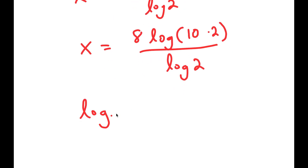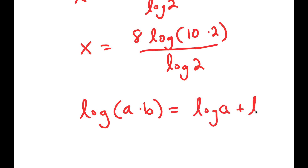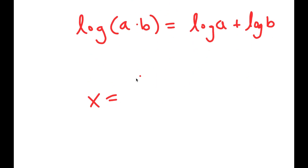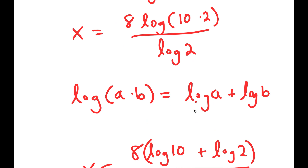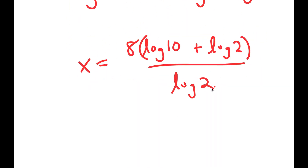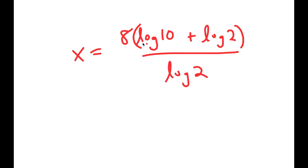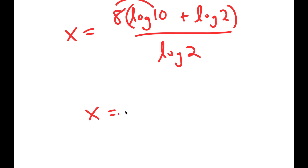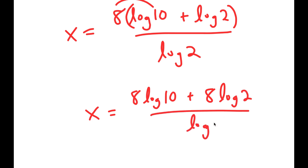Now, if I have something in the form log of a times b, this is equal to log of a plus log of b. So I get x is equal to 8 times the quantity log of 10 plus log of 2, all over log of 2. Now I'm going to distribute the 8, so I get x is equal to 8 times log of 10 plus 8 times log of 2, all over log 2.